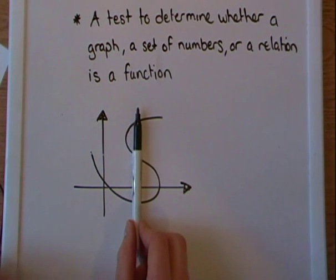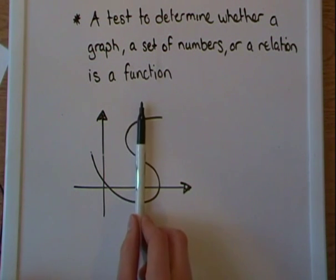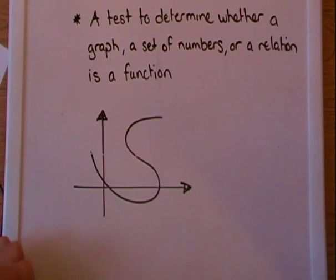Which is not accepted. So this is not going to be a function, since it touches more than one point when I use the vertical line test.